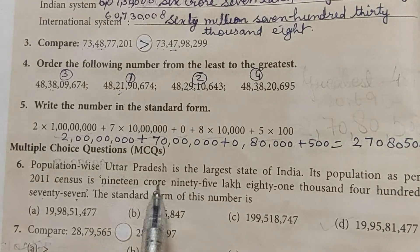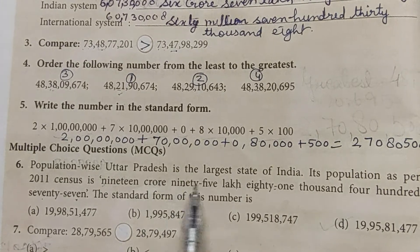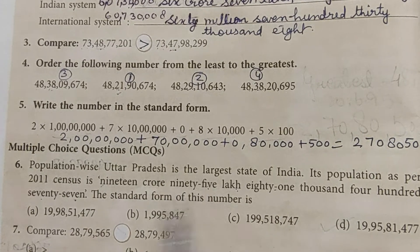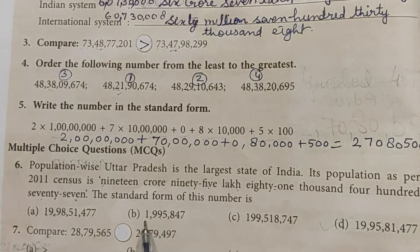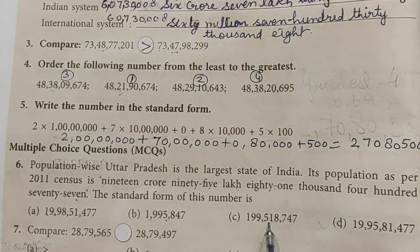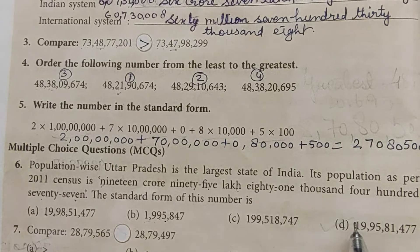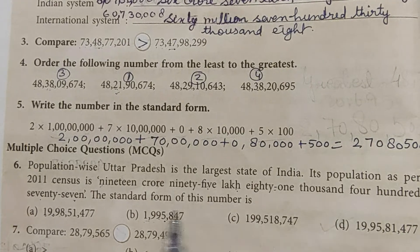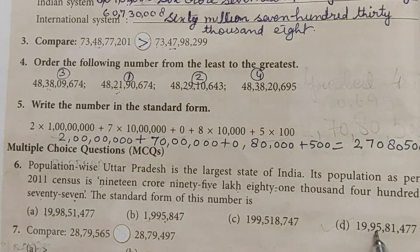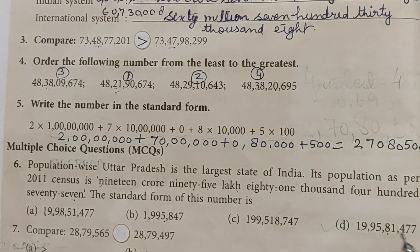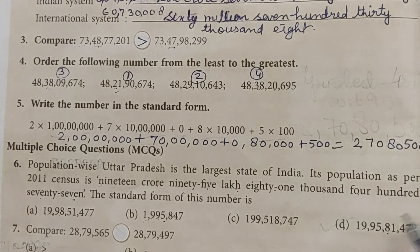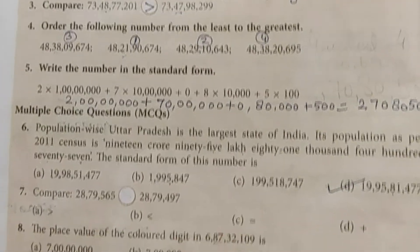Reading the number: nineteen crore ninety-five lakh eighty-one thousand four hundred seventy-seven. In the international system, this is also written as 19,95,81,477. So option D is the correct answer.